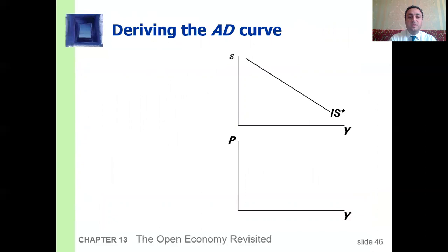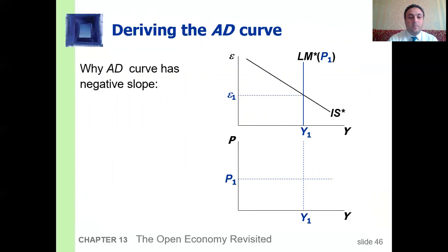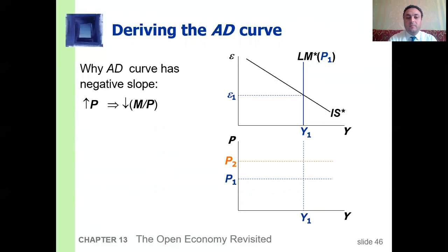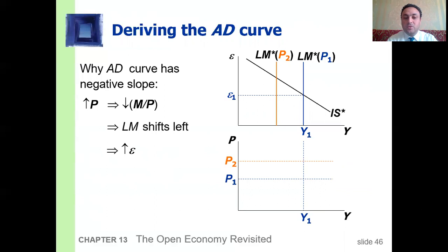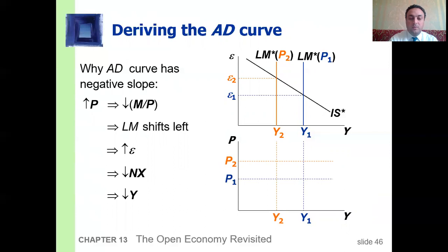Deriving the aggregate demand curve: the aggregate demand curve has a negative slope. When the price level increases from P1 to P2, real money balances decrease, so the LM curve shifts to the left. The real exchange rate increases from E1 to E2. Net exports decrease, and output and income decrease, moving from Y1 to Y2. This gives us the aggregate demand curve.